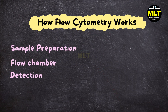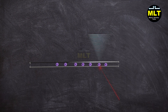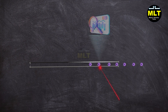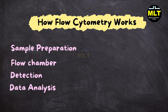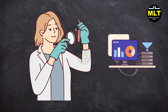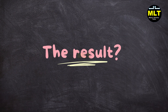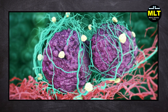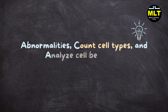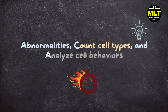Step 3: Detection. As each cell crosses the laser, the light scatters in various directions depending on the cell's characteristics. Detectors capture these scattered light patterns, revealing details like the cell's size and internal structures. Step 4: Data analysis. This data is processed by specialized software which translates it into readable information, generating precise counts, patterns and details that scientists can interpret. The result: incredibly detailed insights into each cell in a sample, making it easier to identify abnormalities, count cell types and analyze cell behaviors faster and more accurately than ever before.